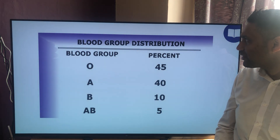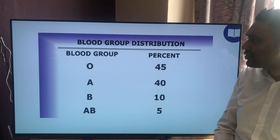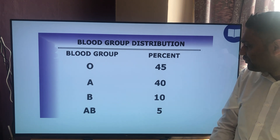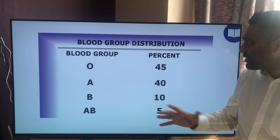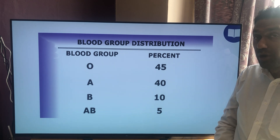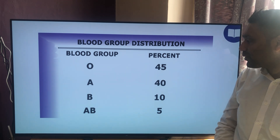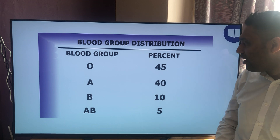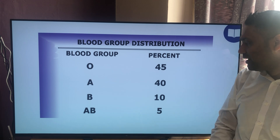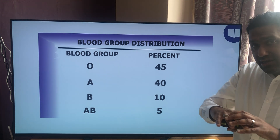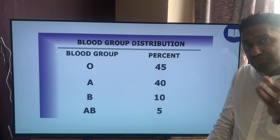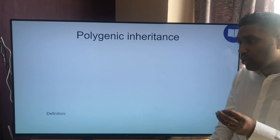Let's start with blood groups. There are four possible blood groups: O, A, B, or AB. But it's not evenly spread — nearly half the population is blood group O, about 40% are blood group A, so the minority are blood group B, and a very small minority are blood group AB. So there's a distribution that's not evenly spread out.